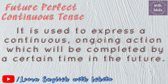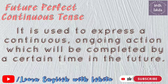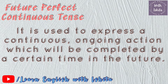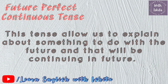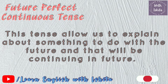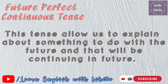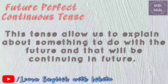So what is the future perfect continuous tense? This tense is used to express a continuous or ongoing action which will be completed by a certain period of time in the near future. It allows us to explain something that will happen in the future and will also continue in the future — an event which will have been going on before a particular time in the future, referring to the duration of that event.